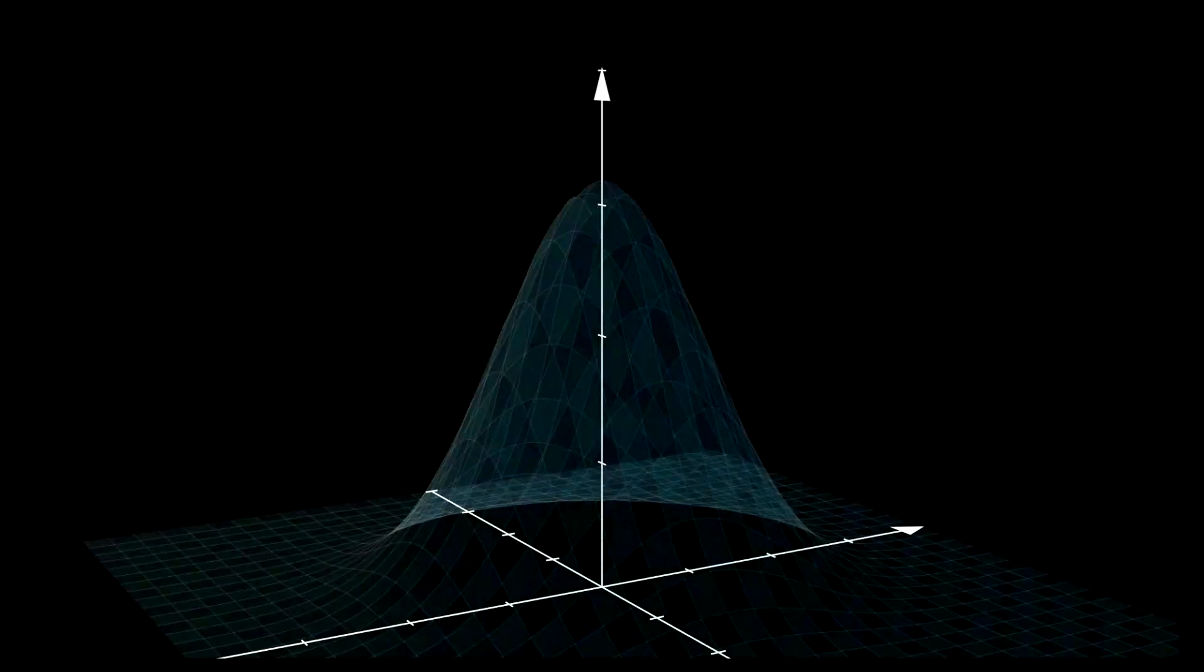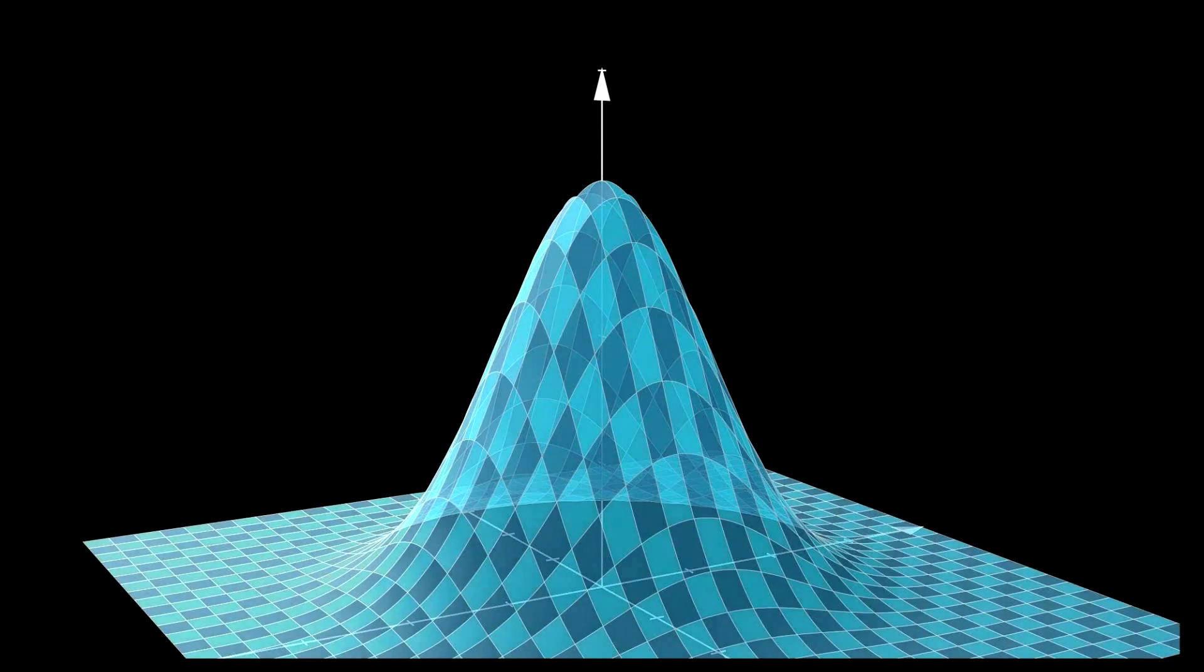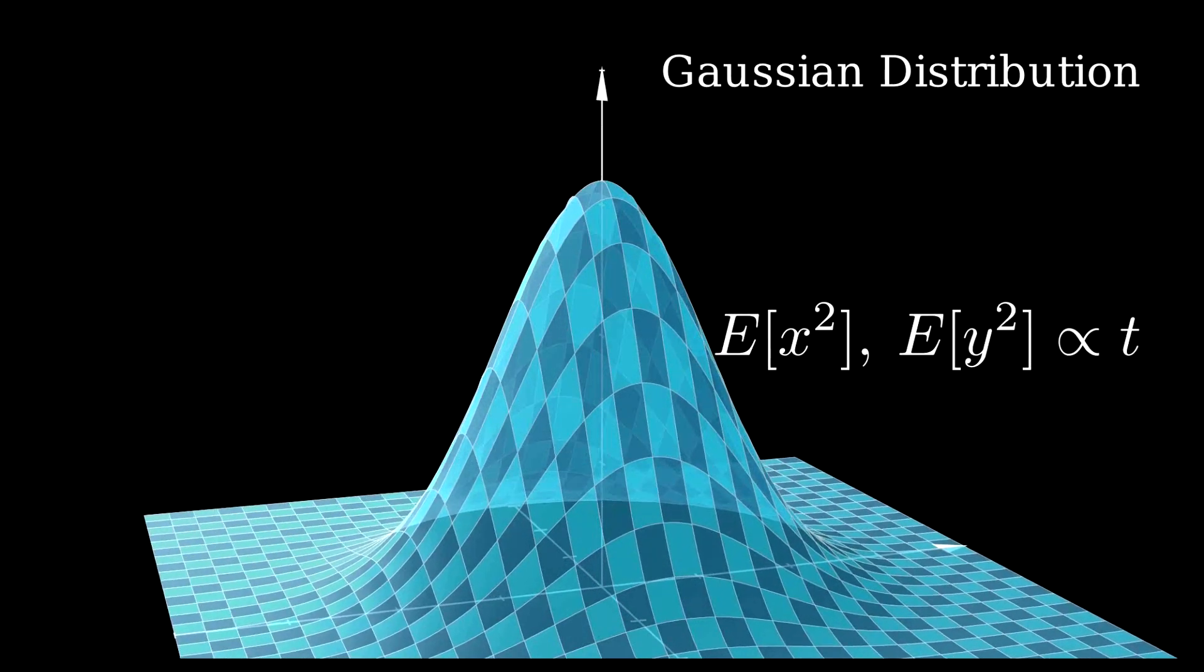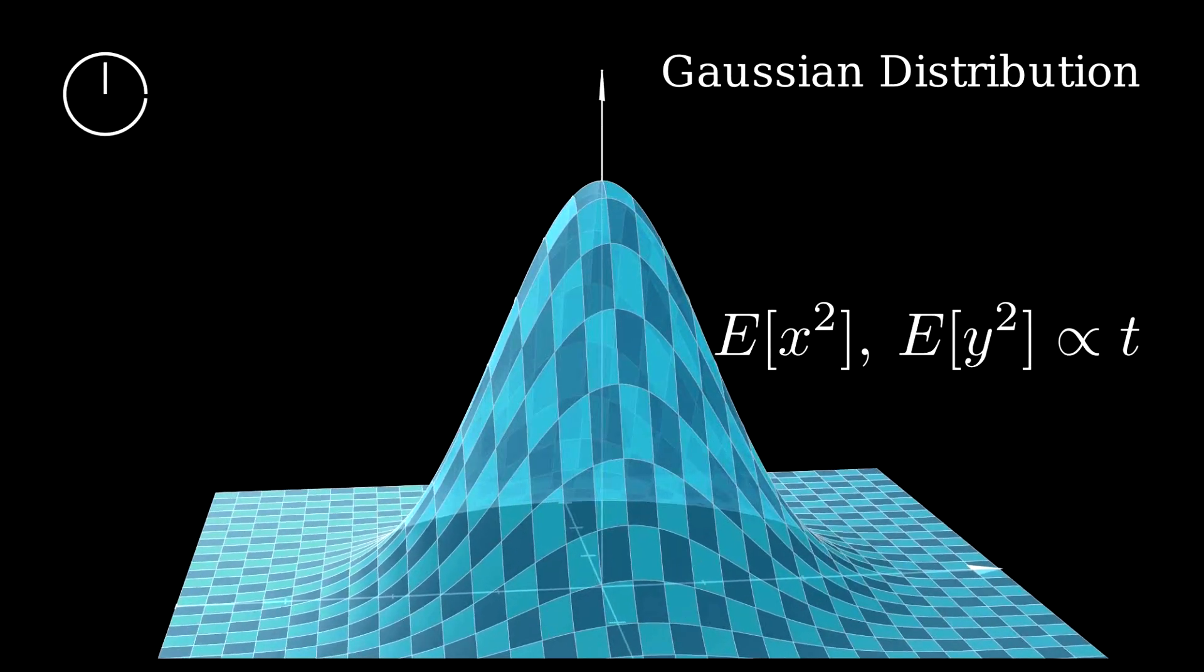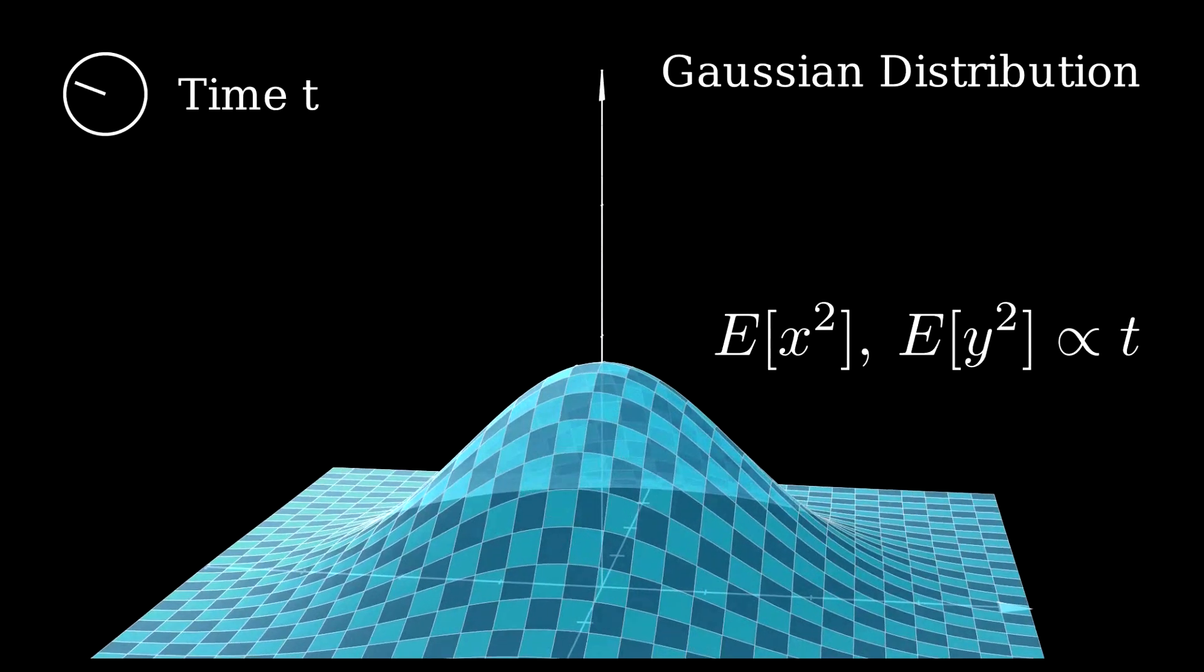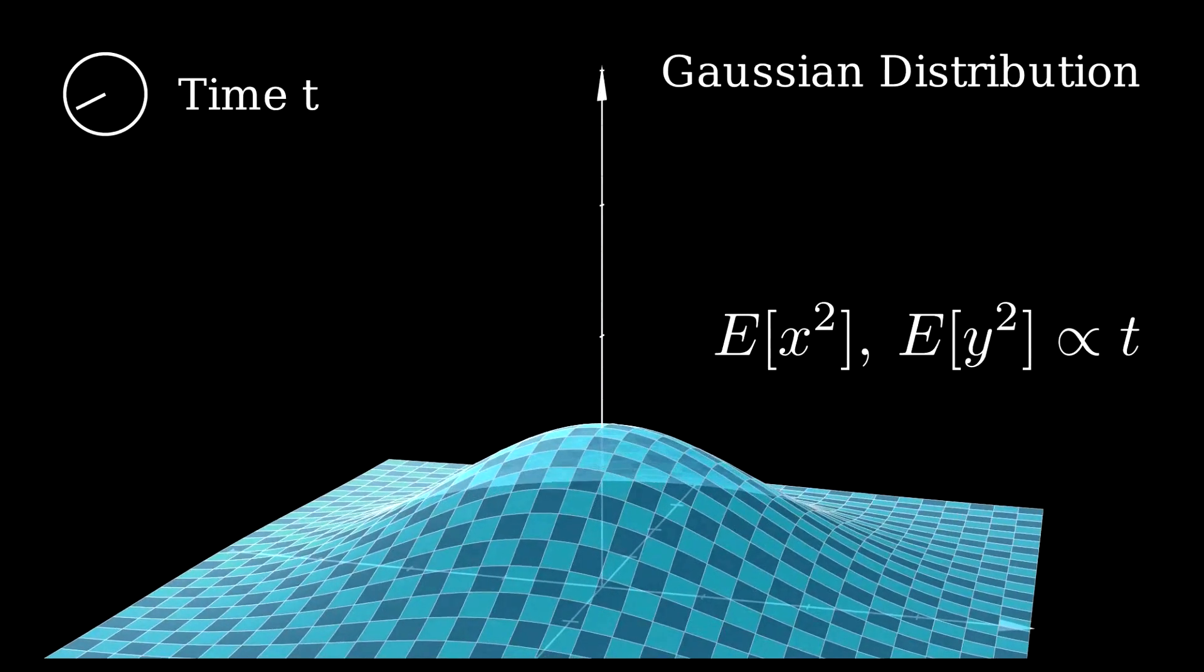This is what the probability density looks like in three dimensions. Again, as you can see, as we move forward in time, the probability density becomes flatter, and the probability to find the particle far away from the origin becomes bigger.